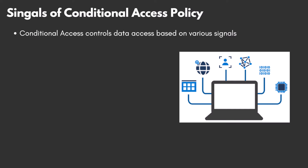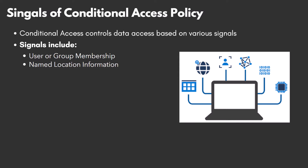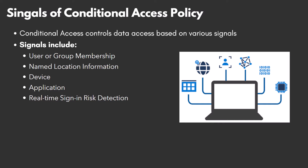Conditional Access relies on several signals to control who can access what data and from where. Conditional Access signals include users or group membership, named location information, device, application, real-time sign-in risk detection, cloud apps or actions, and user risk.